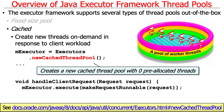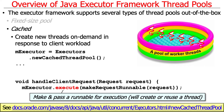A cached thread pool starts out with zero pre-allocated threads. When a request comes in and you call execute, if there are no available threads in the pool, a new thread is created to run the request — threads are created dynamically. Once a thread is created, it hangs around for up to a minute, and if new requests come in and a cached thread is still available, that thread gets recycled and reused for the new request.